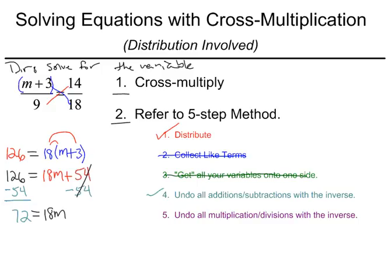And then I'm going to undo all my multiplications and divisions with the inverse. Here I have 18 times m so I will divide by it. And that should in fact give me in the end 72 over 18 is 4. That's equal to m.